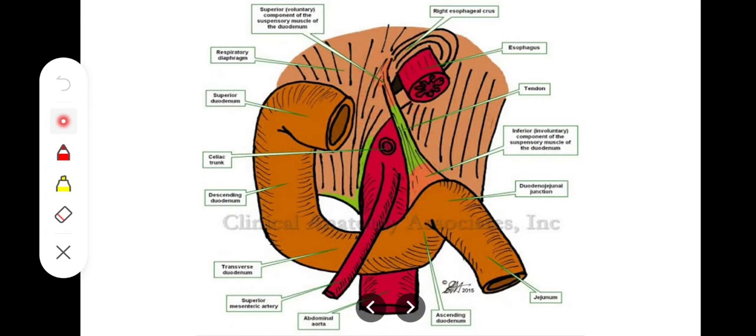This suspensory muscle of the duodenum is basically consisting of three types of tissue. In the upper part it is consisting of striated muscle, that is its voluntary part. In the middle part it is composed of elastic fibers, and its lower part is composed of plain muscle, that is smooth muscle fiber which is involuntary. So upper part is voluntary, middle part is elastic fibers, and lower part is involuntary consisting of smooth muscle fibers. This is the composition of this ligament of Treitz.